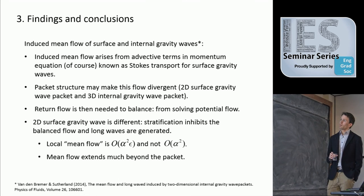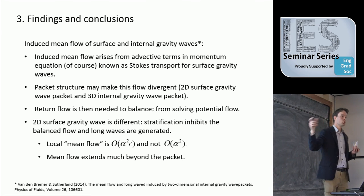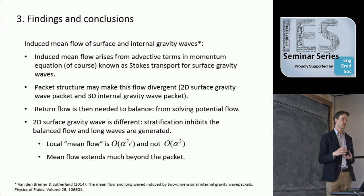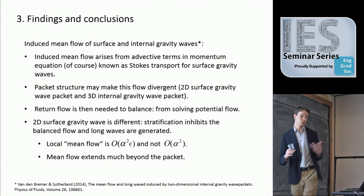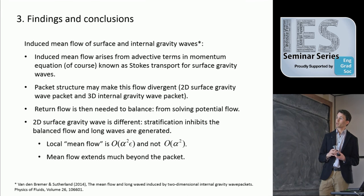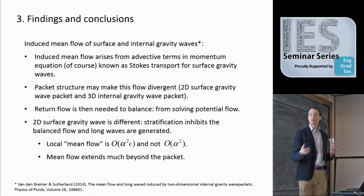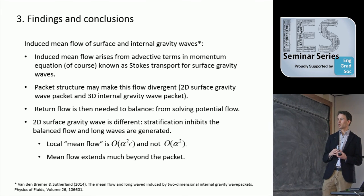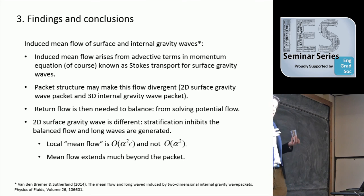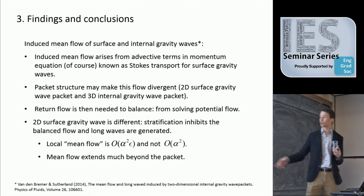Just to sum up — where do induced mean flows generally come from? They generally come from the advective terms in the momentum equation — the u·du/dx type of terms. That's the origin of mean flows in any type of gravity wave problem as well as plasma-type problems. This is known as Stokes transport for surface gravity waves, and that has been measured and is relevant across many applications. It's the packet structure — the fact that you modulate individual waves — that makes this mean flow divergent, and that divergence needs to be compensated for by what we call the return flow, which becomes a potential flow exercise. An also physically important point is that in the 2D problem, the response is an order of magnitude longer than expected — mean flows evolve on a scale one order bigger than the packet.